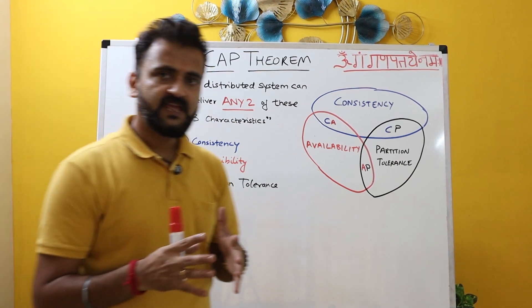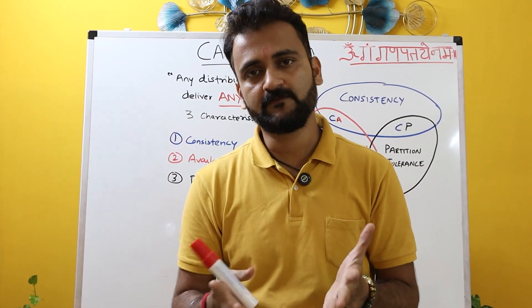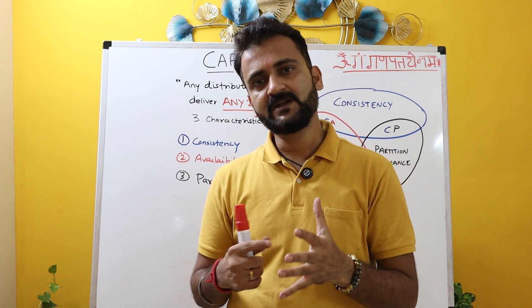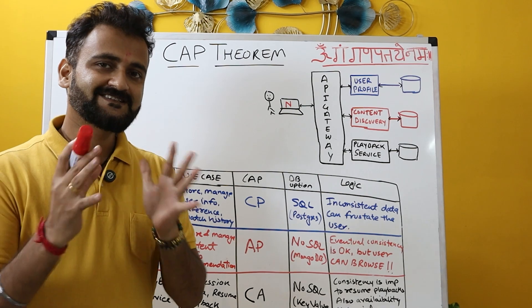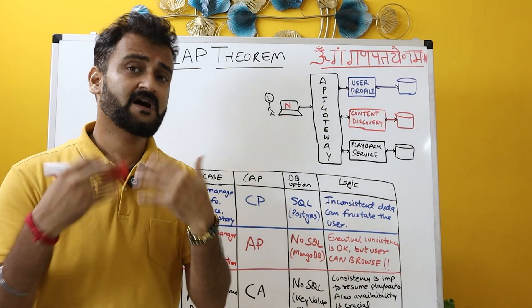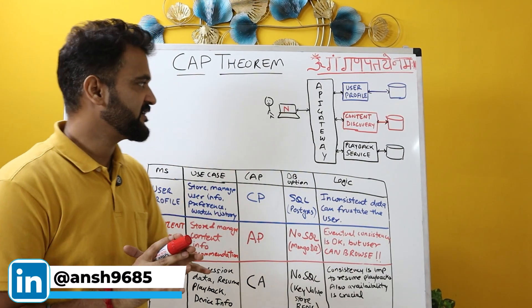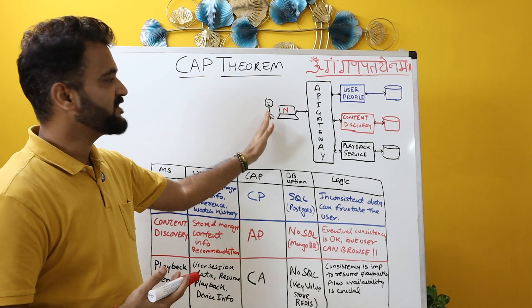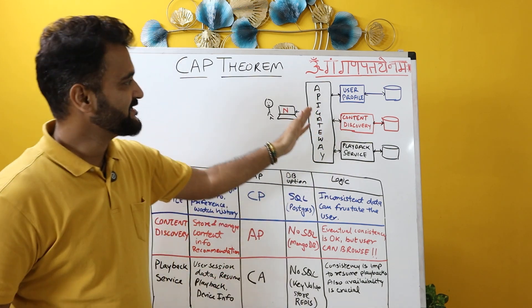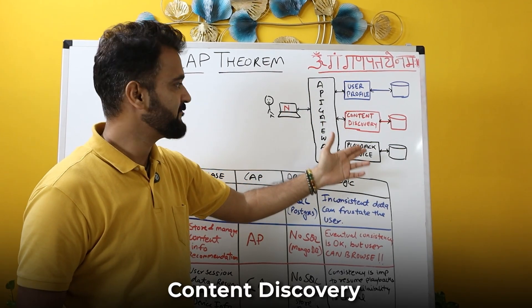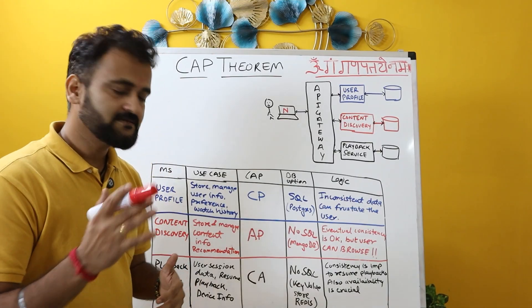Now we will take a case study of a Netflix-like service and see that in a microservices distributed environment, what kind of CAP characteristics we have to apply for what kind of service. So if a user is watching Netflix on their laptop, on the back end they are sending requests to an API gateway, and that API gateway is connecting to respective microservices — user profile, content discovery, and playback service. Each of these three microservices has its own underlying database. Let's understand how CAP can be applied to each.